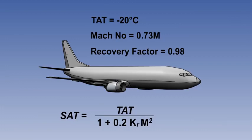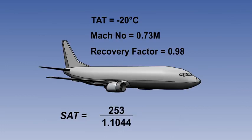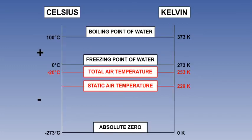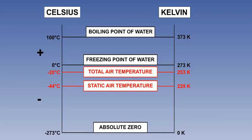Now we substitute into the formula. The TAT is 253, KR is 0.98, and the Mach number is 0.73. Working through the calculation, this gives 253 divided by 1.1044, which is 229. So the static air temperature is 229 Kelvins, or degrees absolute. This is the same as minus 44 degrees Celsius. We have used this formula to go from a total air temperature of minus 20 to a static air temperature of minus 44.